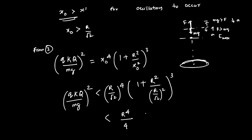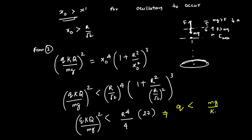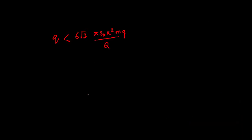Solving further: we get small q less than (4πε₀ mg R²) / (Q · 2 · 3√3), which simplifies to the final answer. This gives the bound on the unknown charge q in terms of m, g, R, Q, and ε₀. I hope you understood the approach; if you have any doubts please feel free to put them in the comment section. Thank you so much.